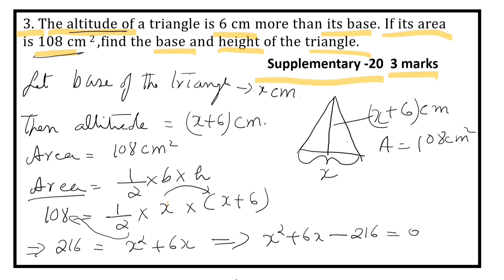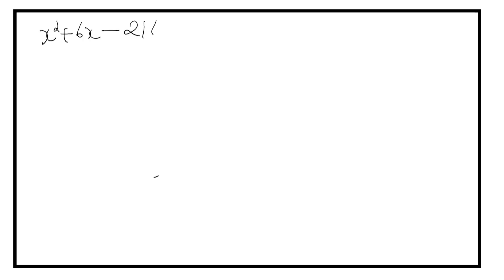This is in the standard form: X square plus 6X minus 216 equals 0. Now we can factorize 216. We need to find factors of 216 that give us a difference of 6.